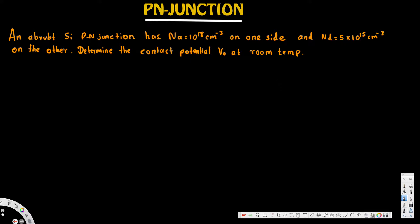Hey, what's going on guys? Let's look at this problem. This question is asking: An abrupt silicon PN junction has Na equal to 10 to the power of 18 centimeter to the power minus 3 on one side, and Nd is equal to 5 times 10 to the power of 15 centimeter minus 3 on the other.